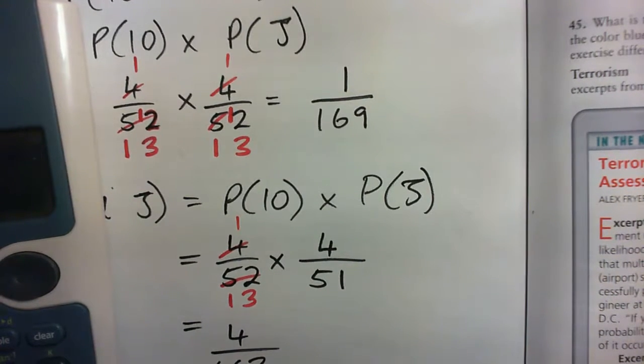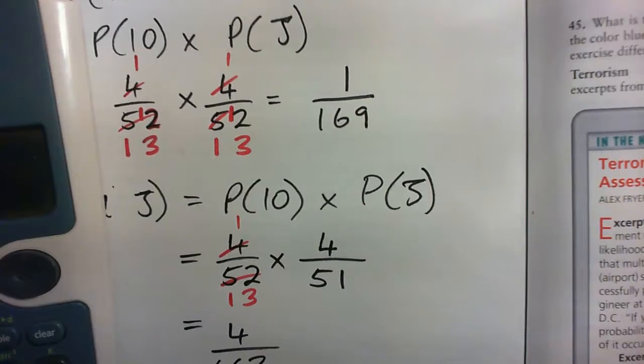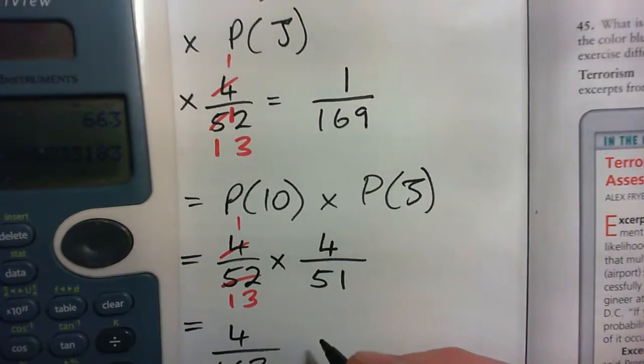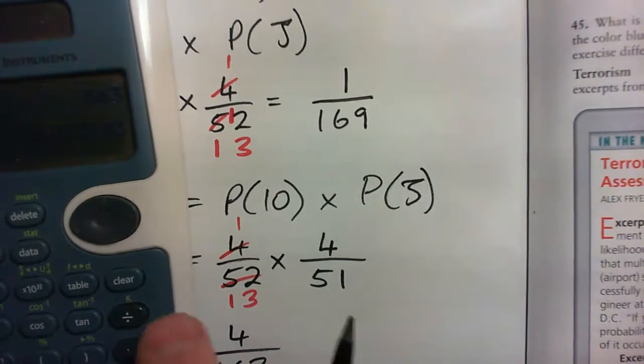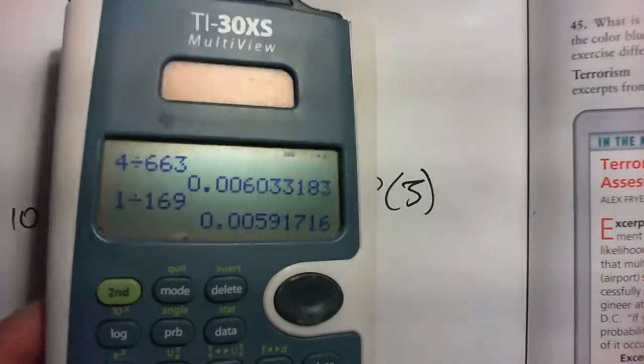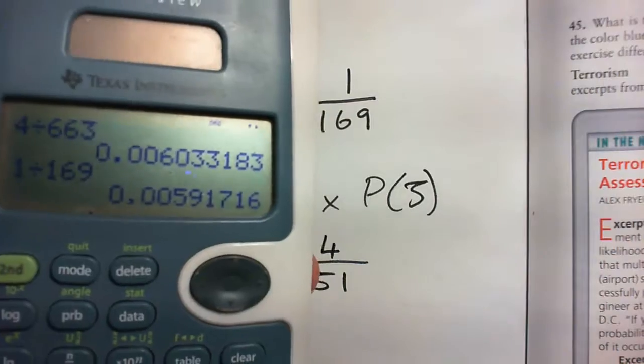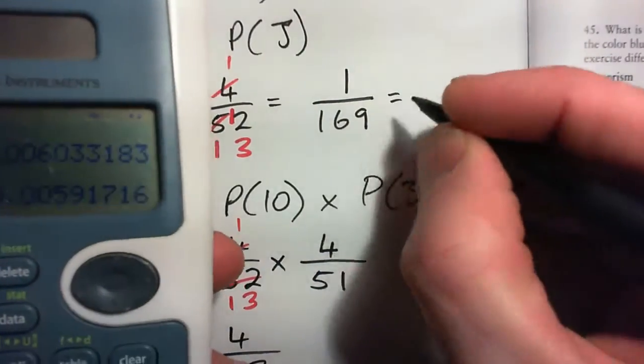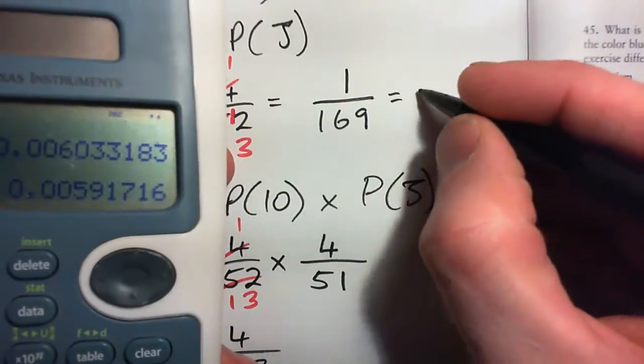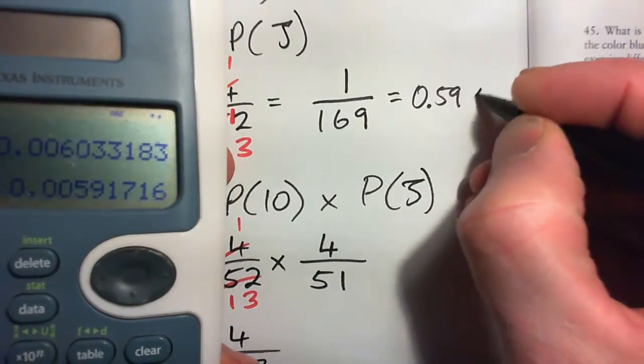And by the way, 4 over 663 is about... Oh, compared to 1 over 169. So let's compare those. So 1 over 169 is about 0.0059, this is about 0.59% chance.